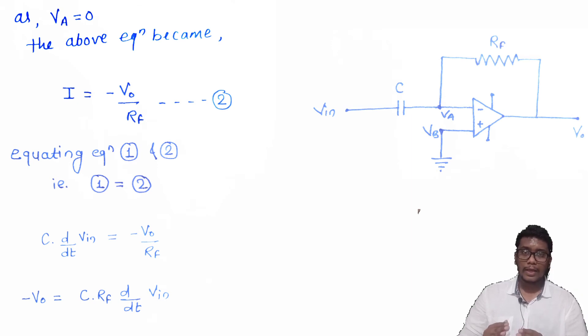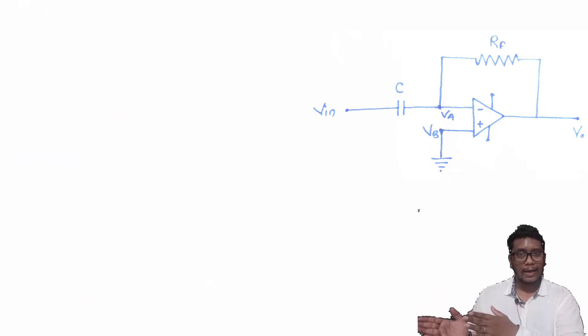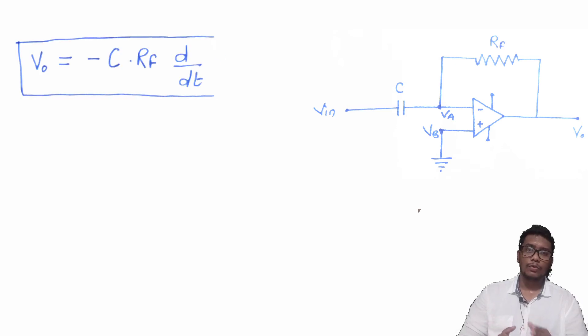The last thing you have to do is changing the sign of the equation. So at the left hand side, V0 is equals to minus C into RF d/dt of VIN. This is the final expression of differentiator.